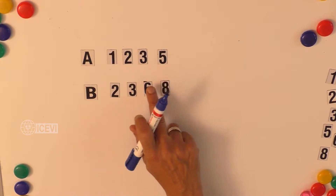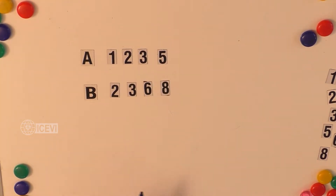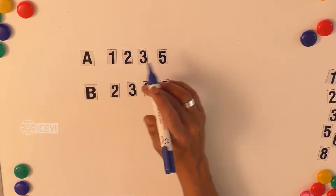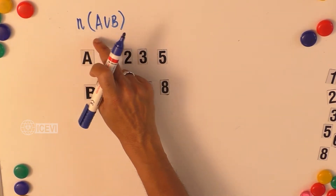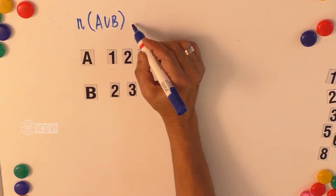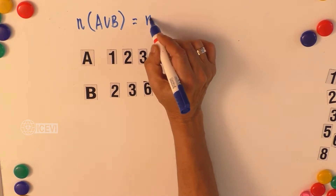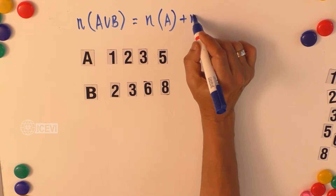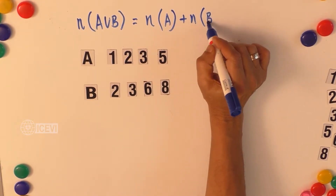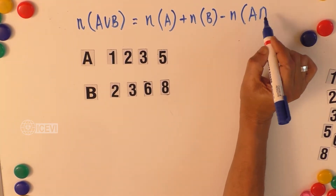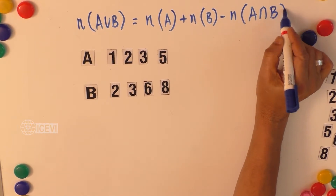The identity in set language states that when sets are overlapping, the cardinal number of A union B equals the number of elements in set A, plus the number of elements in set B, minus the number of elements in A intersection B.